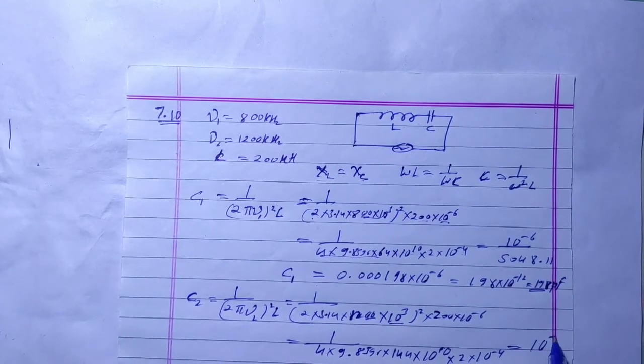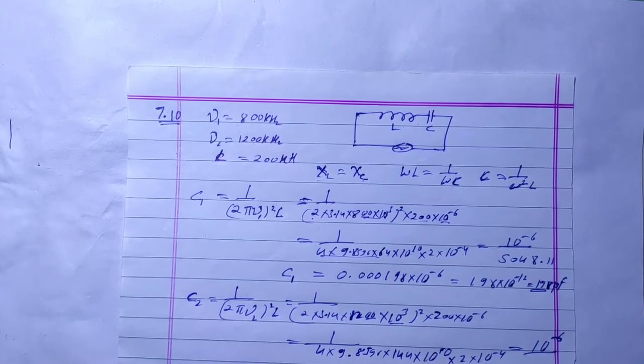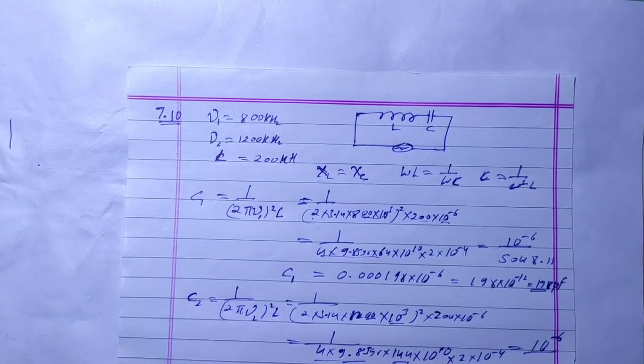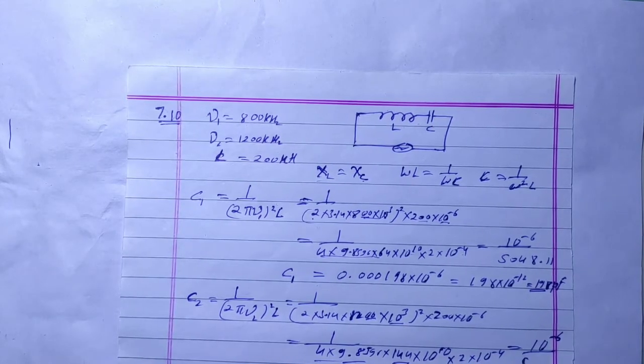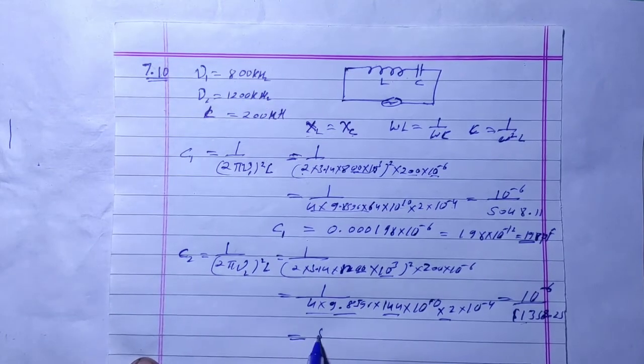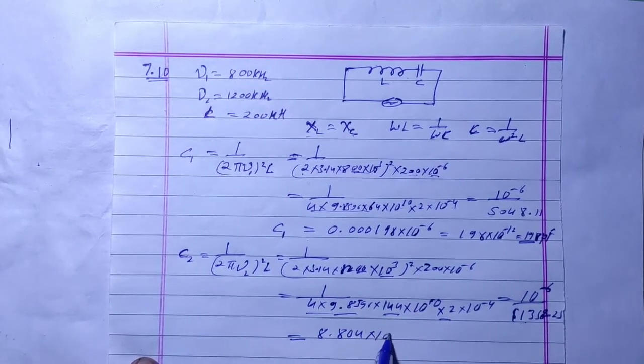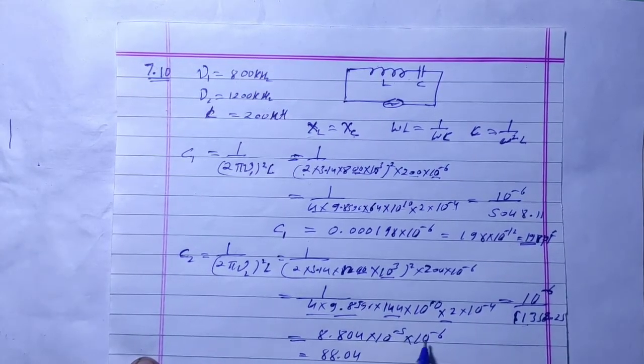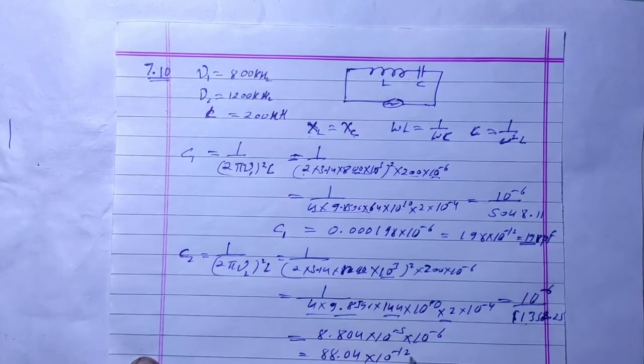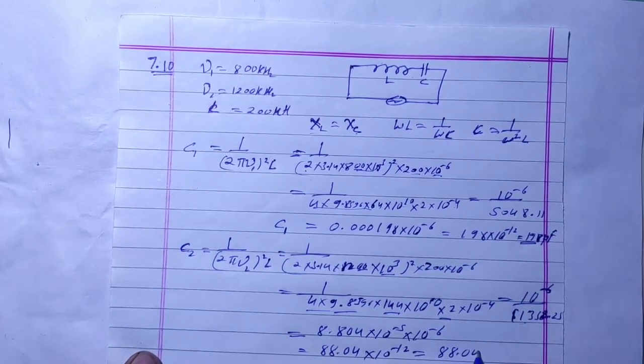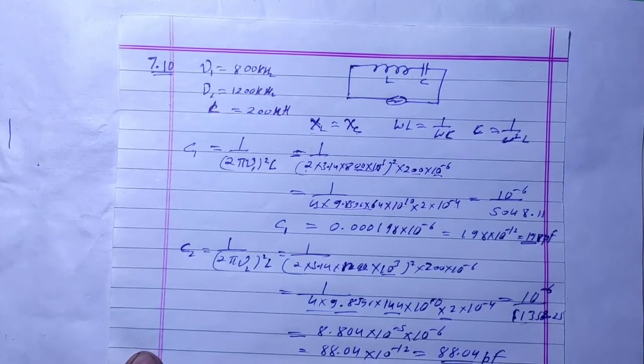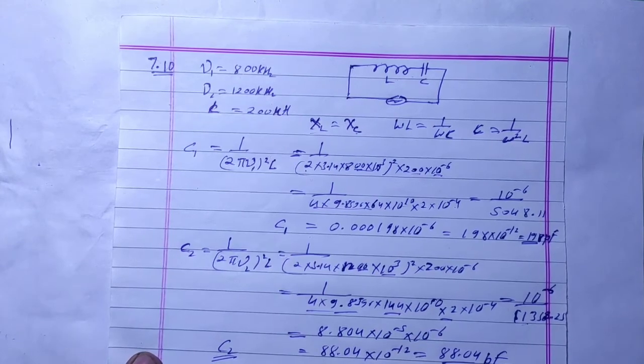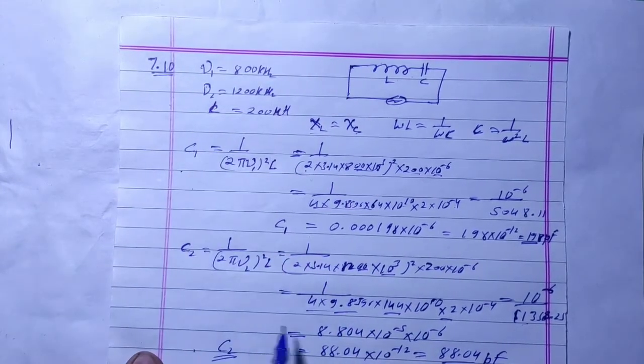This gives 10 power minus 6, 10 power 2, which is basically 88.04 picofarad. This is the second capacitor capacitance.